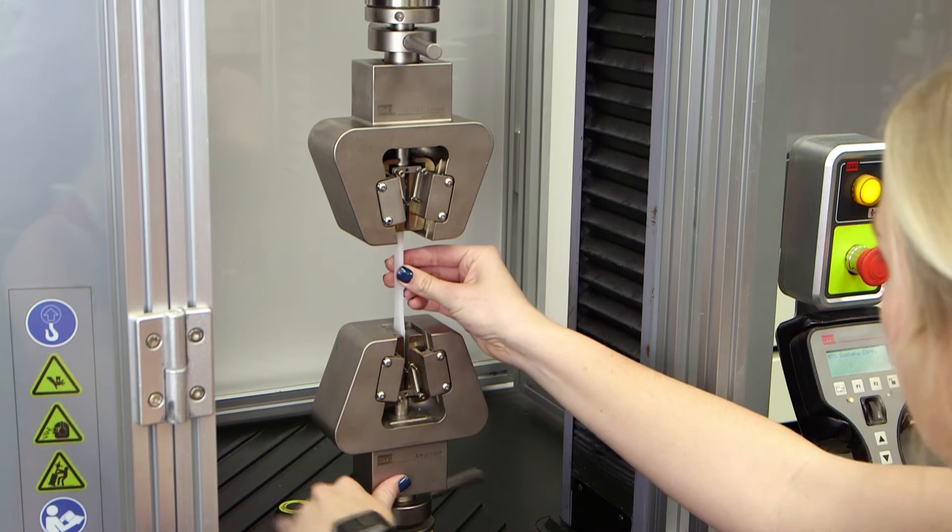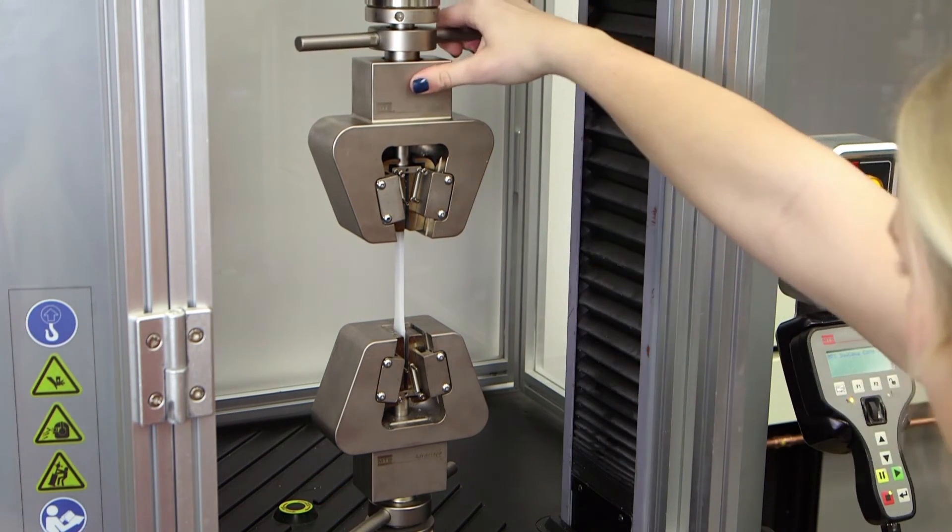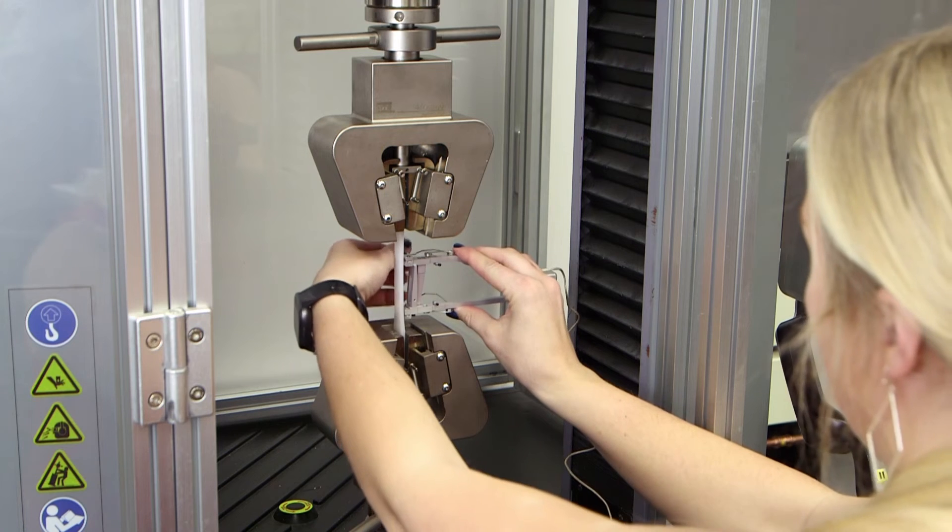The specimen is placed in the testing area. The Advantage wedge grips help ensure proper alignment and help minimize the preload on the specimen.